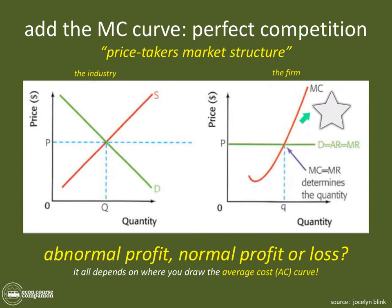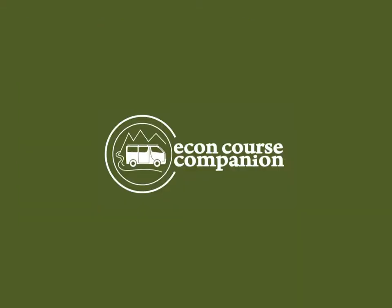And if the cost curve's lowest point on the MC curve is above the price, then at this quantity level this firm will be making a loss. For more detail, check the next videos coming up on abnormal profit, normal profit, and loss. The key point right now is the profit-maximizing level of output where MC equals MR.